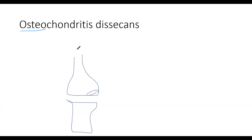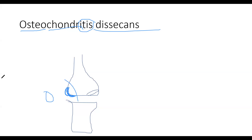Osteo means bone, chondritis means cartilage, itis means inflammation, and dissecans means dehiscence. So osteochondral means bone with cartilage attached. The subchondral bone with the cartilage becomes inflamed and because of this it dissects — it is removed and becomes a loose fragment in the body.